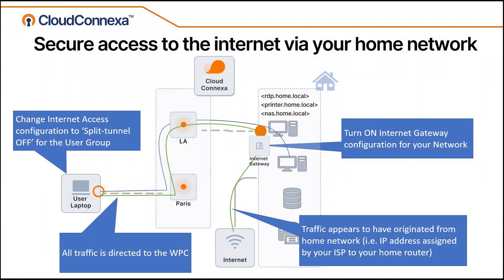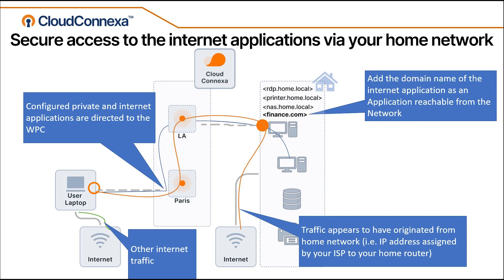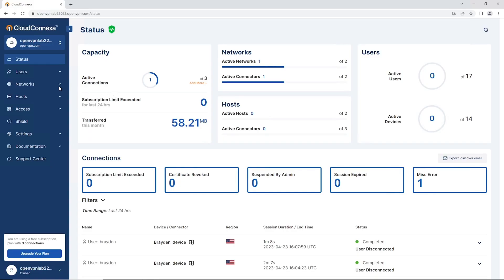In this video we are looking at how to secure access to the internet through our home network using Cloud Connect Zone. We're going to look at two scenarios. The first scenario we're going to direct all internet traffic through WPC for certain user groups. In the second scenario, we're going to secure access to an internet application or website through our home network and through WPC or Cloud Connect Zone. In order to do so we need to be on admin UI.